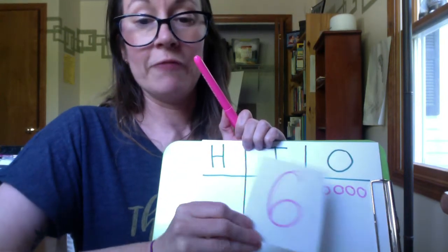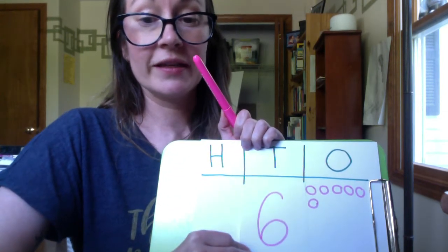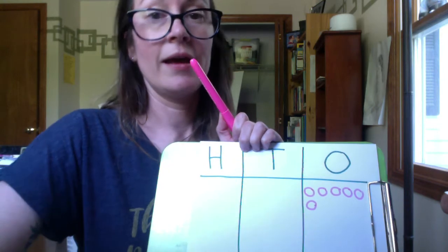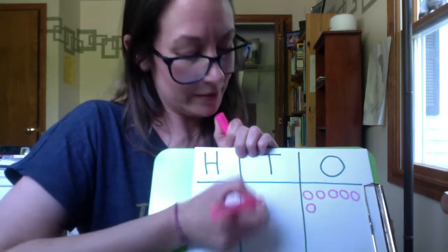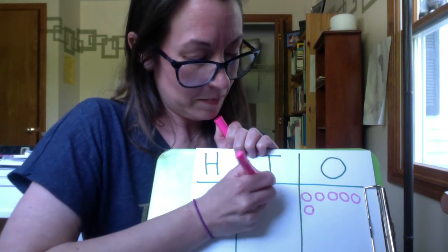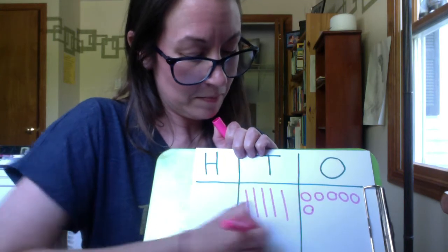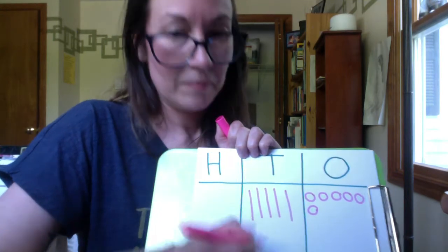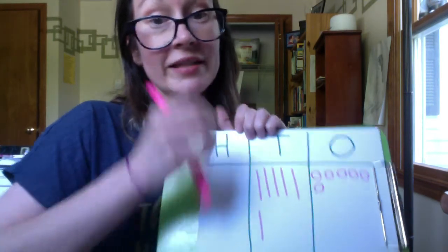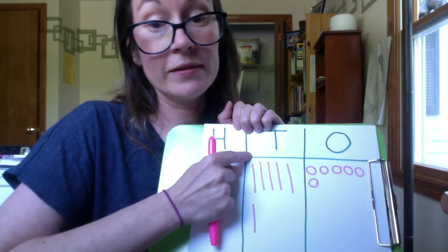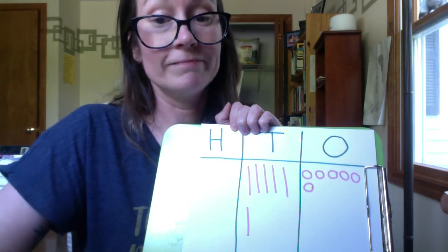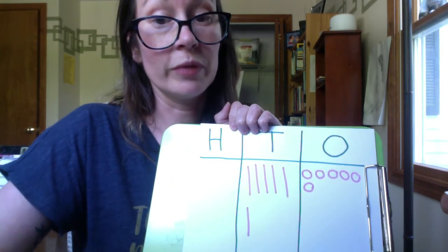If I have six tens, I draw them like this. Remember, they're not tallies, so I don't put the slash this way. I leave the door open.